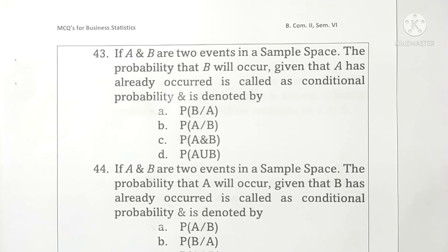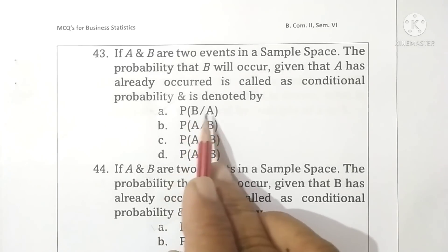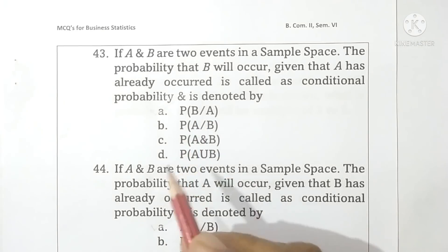Question 43: If A and B are two events in a sample space, the probability that B will occur given that A has already occurred is called conditional probability and is denoted by probability of B given A. Option A is correct.